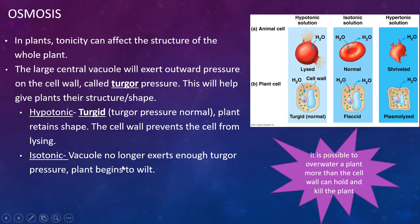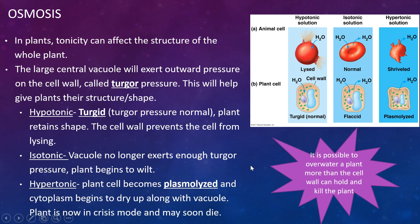So in isotonic for a plant, the vacuole still has some water in it, but it's not pushing that pressure on it and it causes the plant to wilt. And then a hypertonic solution, the cell is called plasmolyzed and that's when the vacuole is really dried up and the plant is very likely going to die.